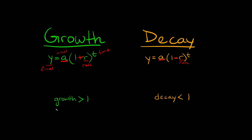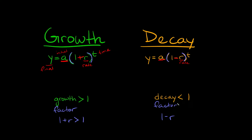Now let's talk about the growth factor and the decay factor — don't confuse these with the growth rate. The growth factor is just what's inside the parentheses: (1 + r). When that value is bigger than one, you can identify the function as exponential growth. The decay factor is (1 - r), what's inside the parentheses on the decay side. When your decay factor is less than one, that identifies the function as exponential decay.